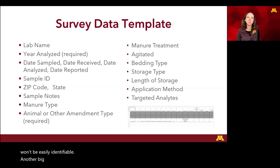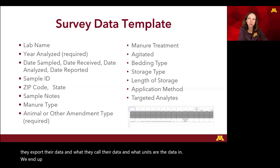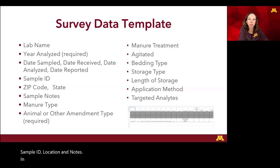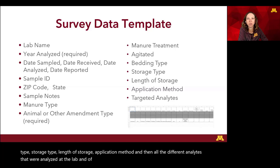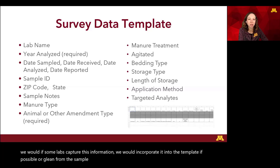A big challenge working with many laboratories is dealing with how they export their data, what they call their data, and what units the data are in. We ended up creating a data template to help standardize these fields. Some of the columns we have include the name, year, different dates for sample processing, sample ID, location and notes, manure type, animal or other amendment type, treatment, bedding type, storage type, length of storage, application method, and all the different analytes analyzed at the lab. Not every sample has all of these things recorded, but if some labs capture this information, we incorporate it into the template or glean it from sample notes if they were descriptive enough.